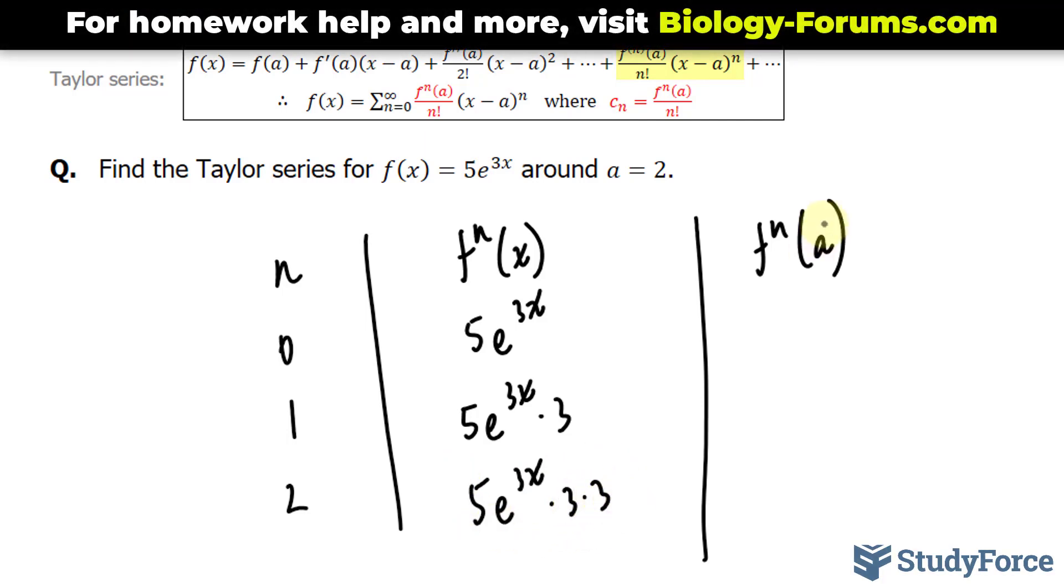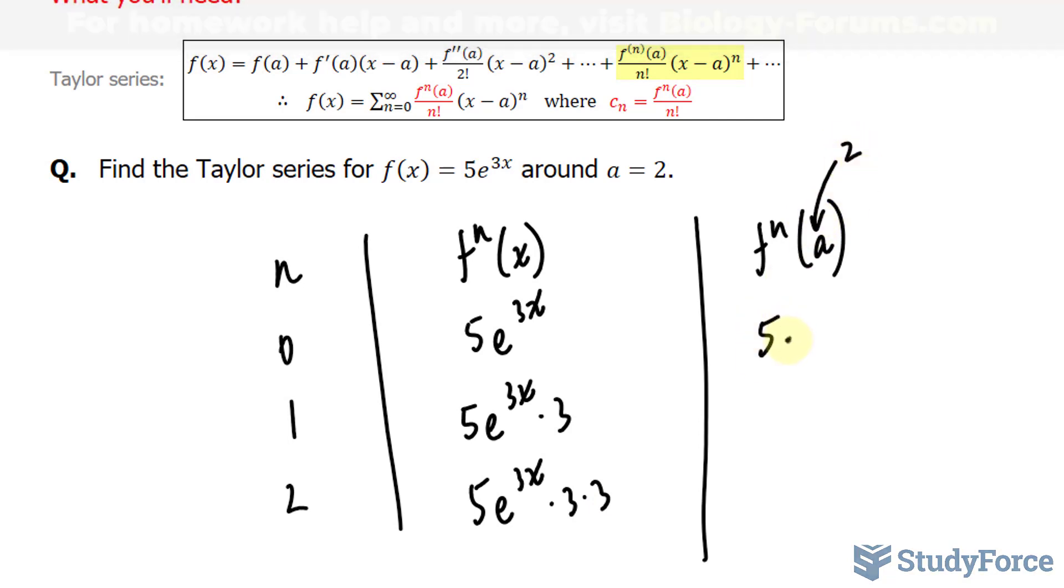Now if I evaluate this where a = 2, I have 5e^6, 5e^6 times 3, 5e^6 times 3 times 3.